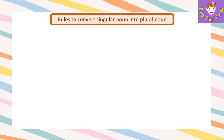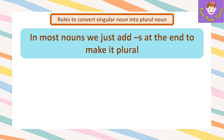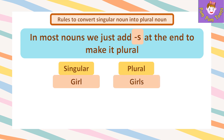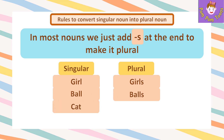Rules to Convert Singular Noun into Plural Noun. In most nouns, we just add S at the end to make it plural. For example, girl → girls, ball → balls, cat → cats.